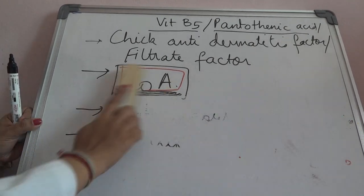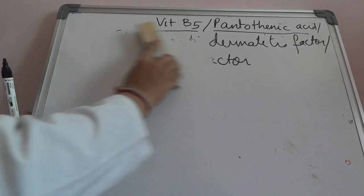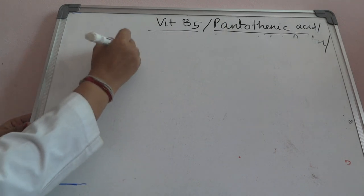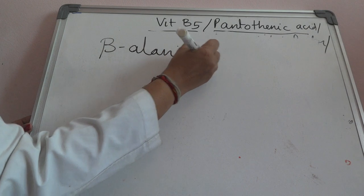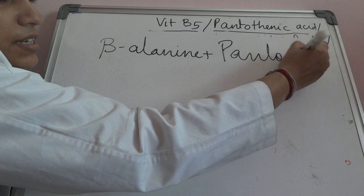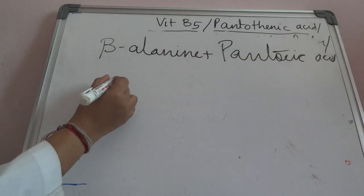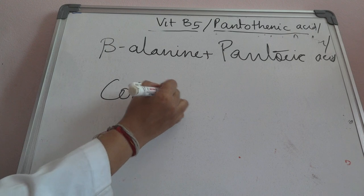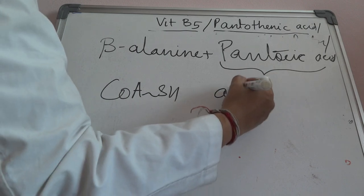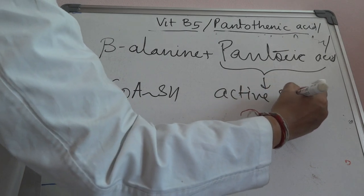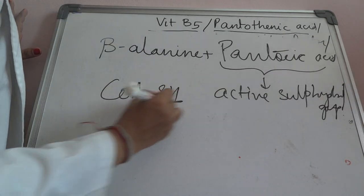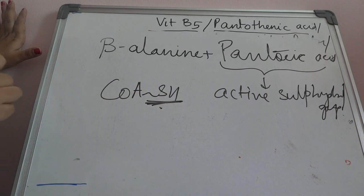Now we see the chemical structure of vitamin B5, that is pantothenic acid. It is formed from beta-alanine plus pantoic acid. Whenever we write coenzyme A, we write coenzyme A-SH. This pantoic acid is the one which provides an active sulfhydryl group, and that is why this active sulfhydryl group is present in coenzyme A-SH.